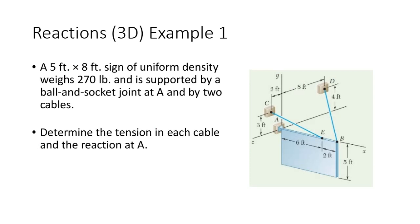The easiest way to go through this is to look at an example. What we have here is a sign. We're going to say it has uniform density and it weighs 270 pounds. When we say a shape has uniform density, it's not denser in one spot than another. For a rectangle, the centroid is just in the middle of it. So we can idealize that sign as a 270-pound magnitude vector acting downward in the Y direction right at the middle of that sign.